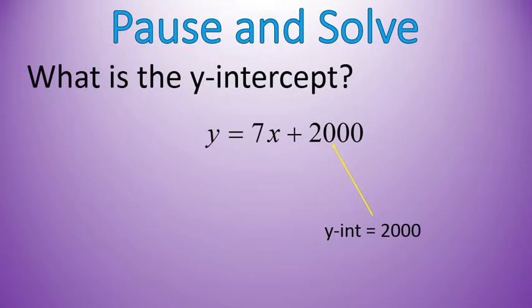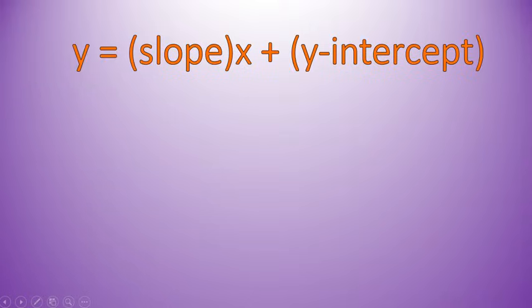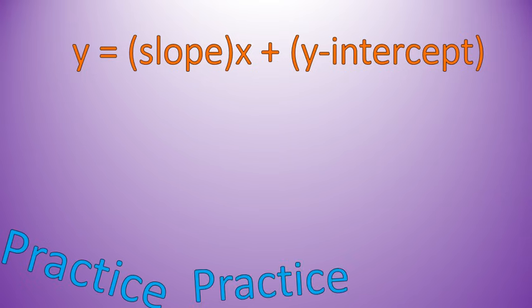Whenever you have a line written in this form with y by itself on the left, some number times x plus another number, the number in front of x is the slope. The number here is where it crosses the y-axis. That is it. This is called the slope-intercept form of the line. Make sure to practice, practice, practice. I hope that lesson was helpful for you. You can check out some other videos. Have a wonderful day.